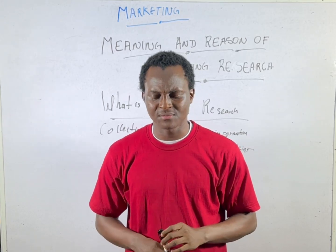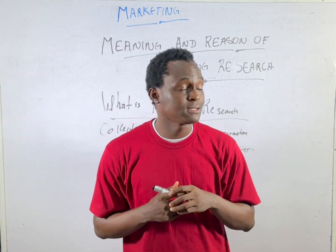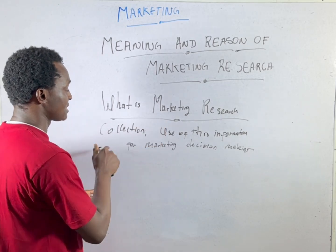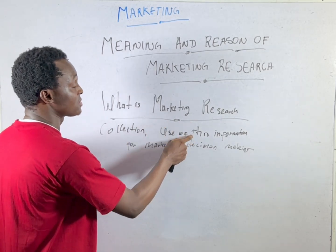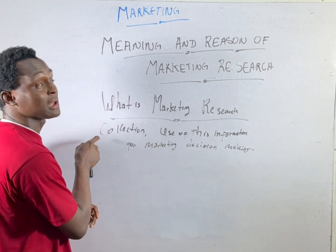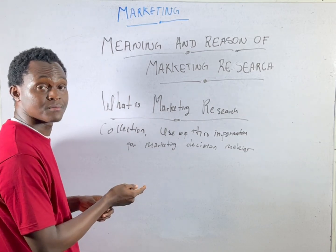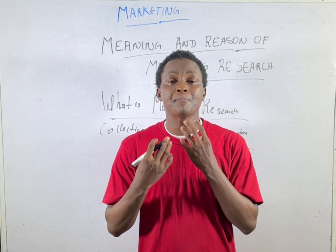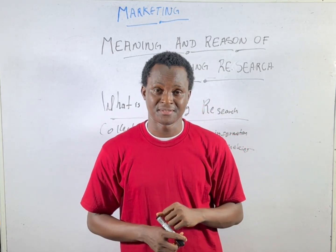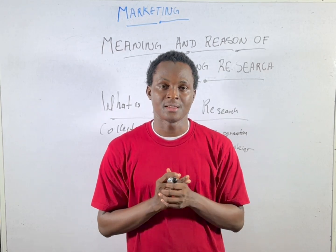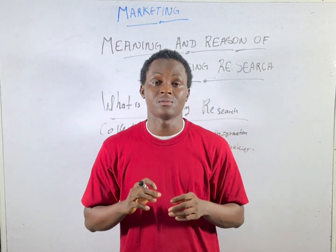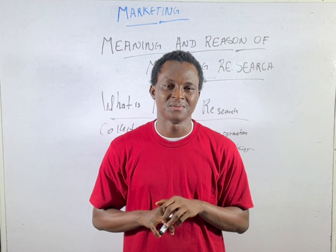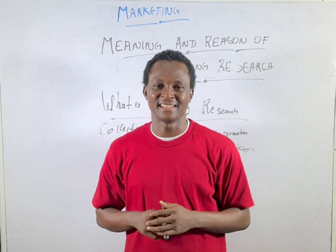In this lecture series, we have been able to explain what marketing research is. We've seen that it involves two things: collection and use of information. We've seen how we can get information through websites and physical methods. We've also seen the importance of carrying out market research. I believe that with this lecture, when called upon to answer questions in this area, you can answer them. I hope you guys enjoyed this lecture — see you in the next class!